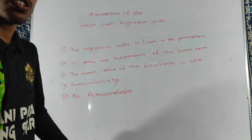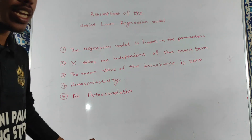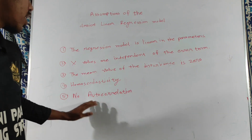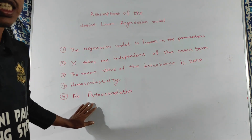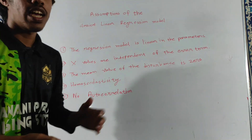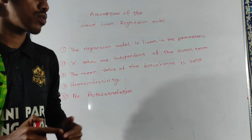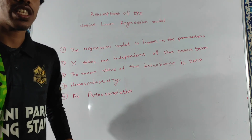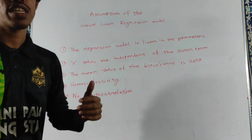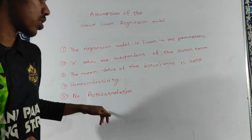Autocorrelation is also an important assumption. In the case of the error term, if there is a correlation between error terms across observations — that is, a correlation between the disturbances — this is the autocorrelation problem.